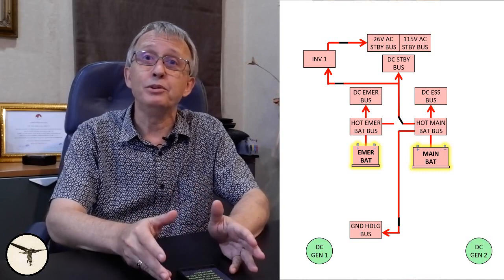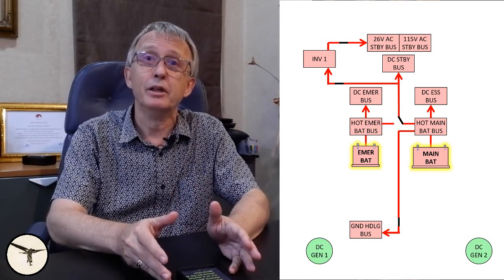Then we have two DC starter generators. They are attached to their respective engines and give 28 volts electric power. The starter generator acts as a starter up to 45 RPM and above 61.5 RPM it acts as a generator.